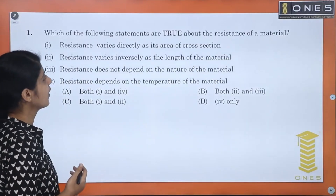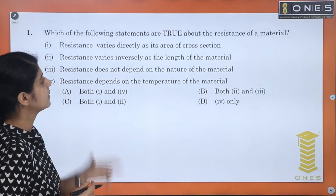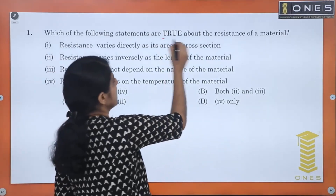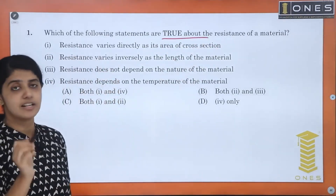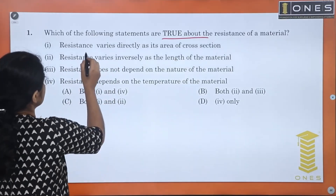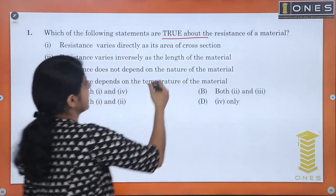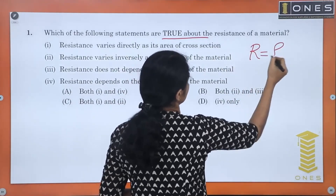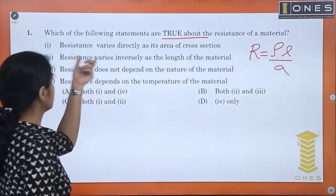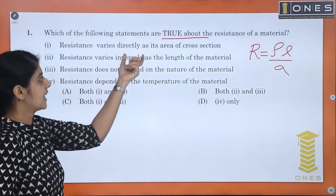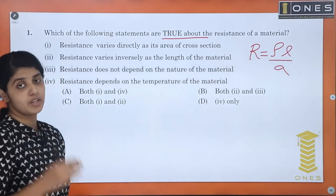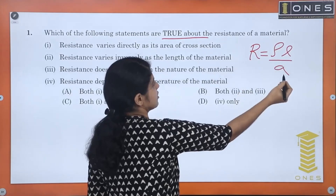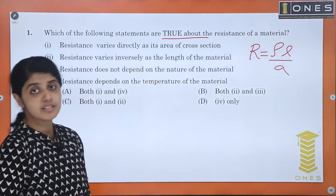First question: which of the following statements are true about the resistance of a material? The first statement is: resistance varies directly as its area of cross section. Looking at the equation, resistance R equals rho L by A. Resistance and area of cross section are actually inversely proportional — so no, that statement is wrong.